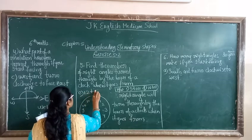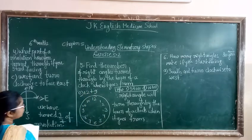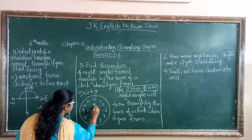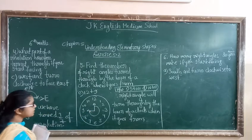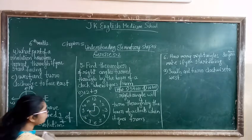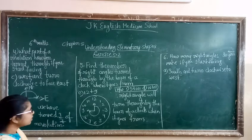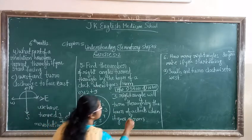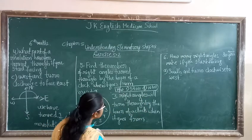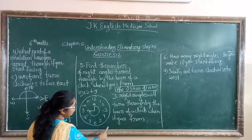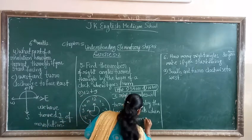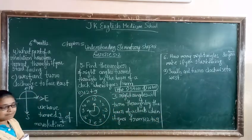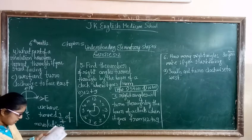Two to nine — okay, 12 to 9 — means three turns of transition, so how many right angles will we get here? One, two, and three. So three right angles will be turned through by the hour hand of a clock when it goes from 12 to 9. This is E: 12 to 9, we will get three right angles.